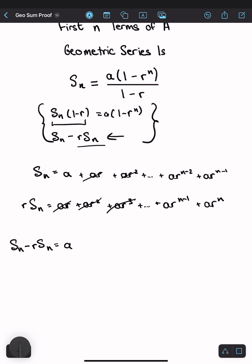ar cubed would also cancel. ar to the n minus 1 cancels there which means that ar to the n minus 2 does too. But we don't have an ar to the n in the first sum to subtract from, so you just have minus ar to the n.